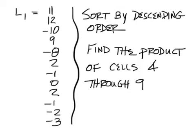Here's another practice problem. L1 is given to you and sort by descending order after you put it in. Find the product of cells 4 through 9. The answer on this should be 0.